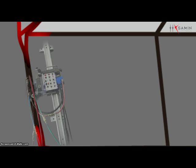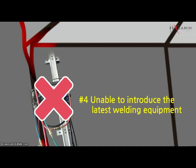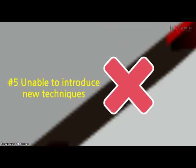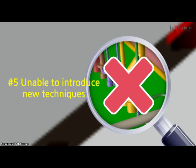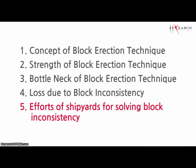In addition, inconsistent hulls make it difficult to introduce the latest welding equipment such as EGW, as well as new equipment like pre-outfitting. Large-size shipyards introduce quality control technology to solve block inconsistency issues.